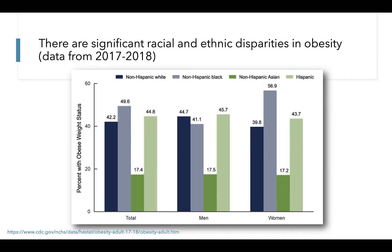Certain groups are disproportionately affected by obesity, leading to significant sociodemographic disparities. Here's just one example of racial and ethnic disparities in obesity in the United States. This bar chart shows prevalence of obesity for men and women combined and separately, broken out by race and ethnicity. The darker blue bars are non-Hispanic white adults, the lighter blue bars are non-Hispanic black adults, the darker green bars are non-Hispanic Asian adults, and the lighter green bars are Hispanic adults.